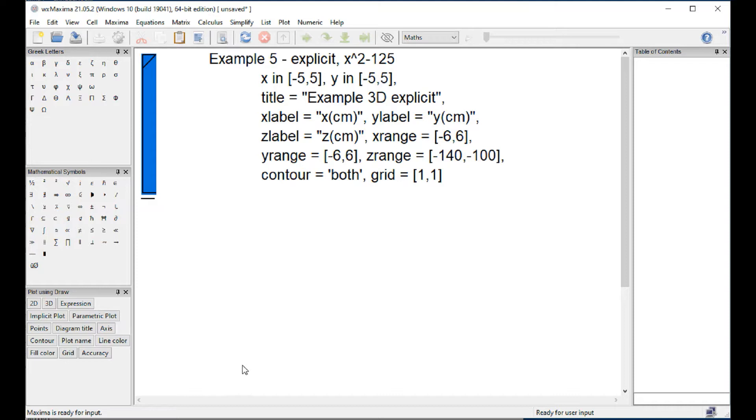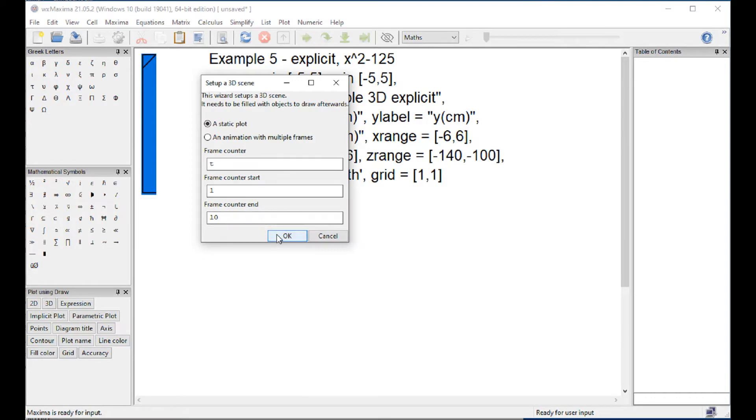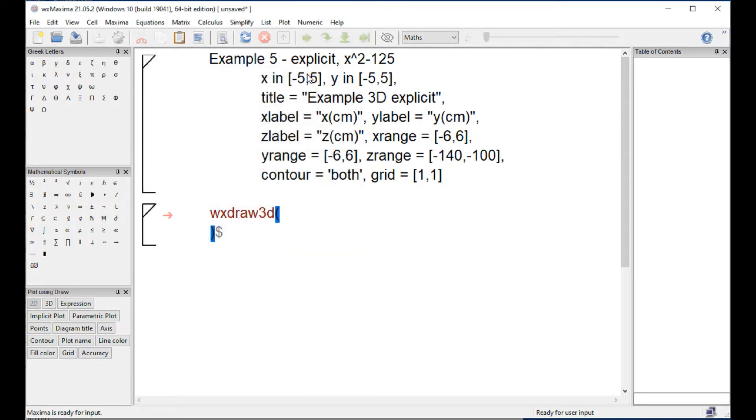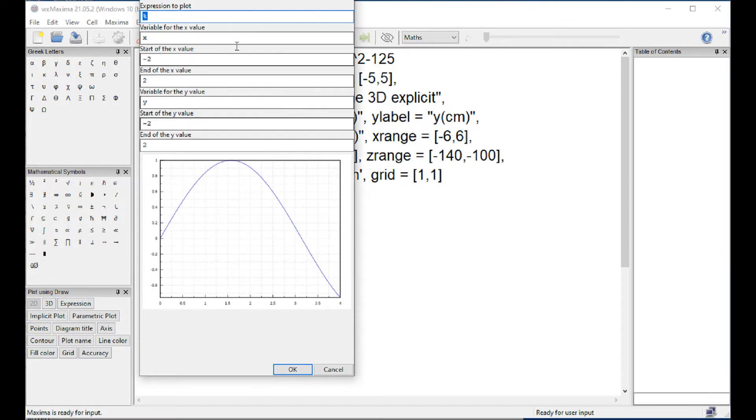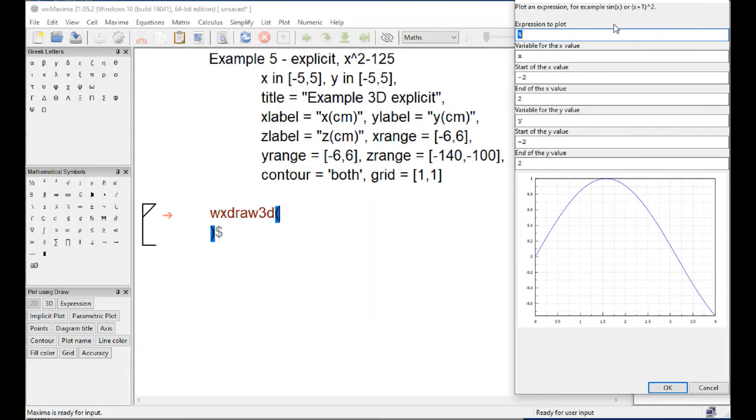This is going to be a 3D explicit, so we've got 3D, we don't want an animation, we can just play OK, and then we need the explicit X squared plus Y squared minus 125, with X between minus 5 and 5, and Y between minus 5 and 5.